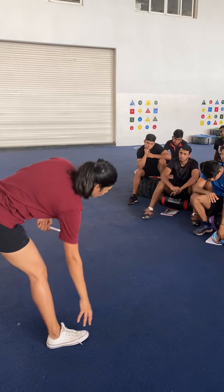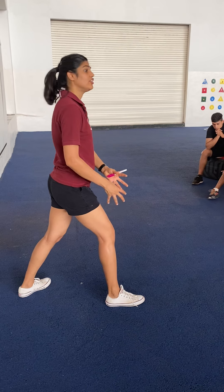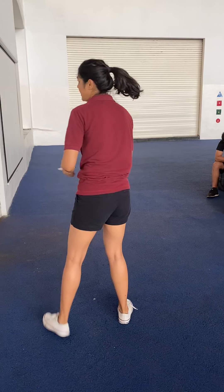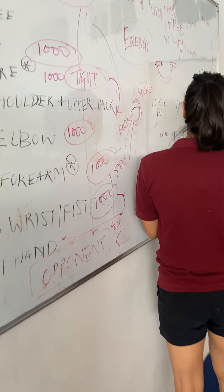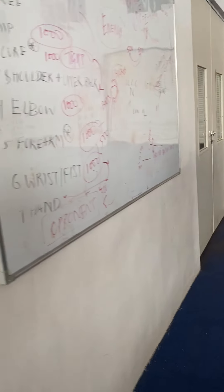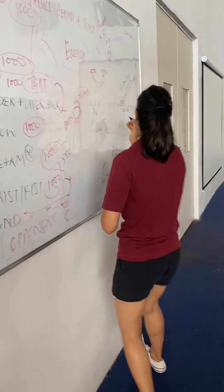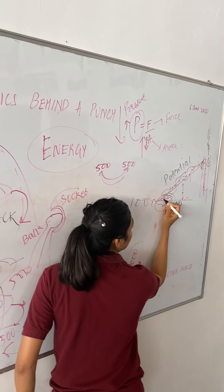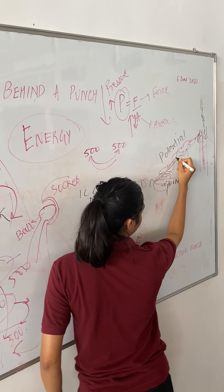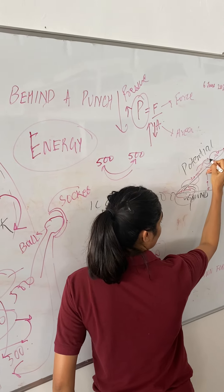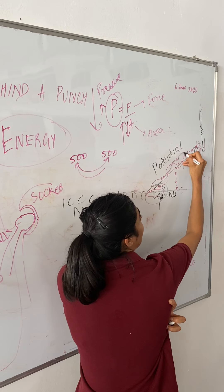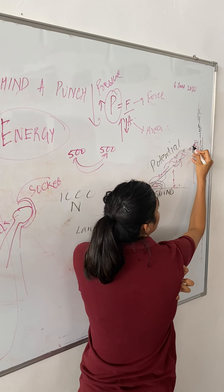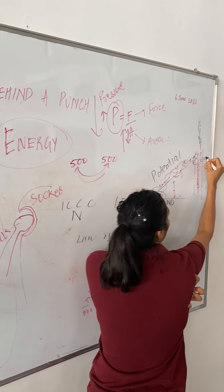So the whole idea is conserving the energy, using it at the right places, transferring it the same way, and sending it. Pretty much what we discussed: I use my ankle, I push it down with the ground, the ground gives me some energy, I transfer it to my hip, use my core, use my lats, bring it to my shoulder, elbow, wrist, knuckles — and opponent.